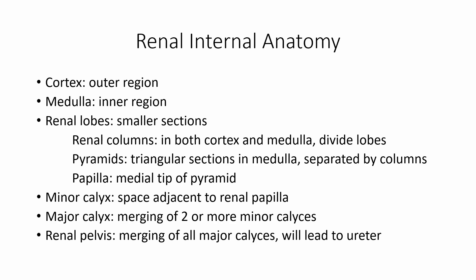The renal columns are going to divide the lobes, going from the cortex down into the medulla. Within the medulla, we're going to see these pyramid shapes that are separated by the columns. The tip of that pyramid is going to be the papilla. In the space right next to that, we have the minor calyx. Where these minor calyces merge, we have the major calyx. And then these are going to come together to form the renal pelvis, which is what continuously leads into the ureter.